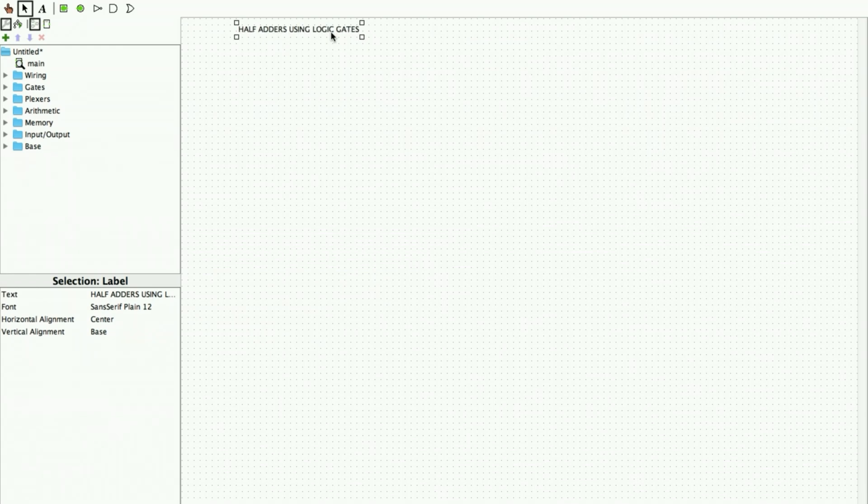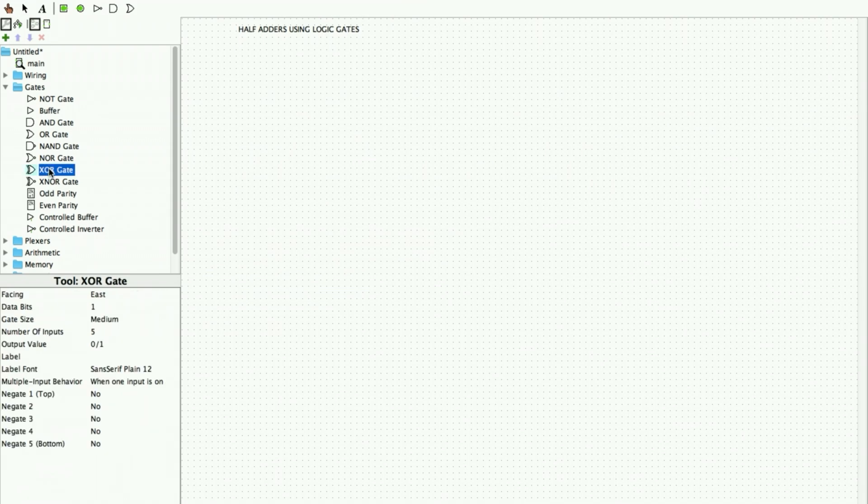So now for my initial half adder circuit I need just two gates. I go to gates here and I need an XOR gate. I click and place it on the screen, and I need an AND gate. I click and place it on the screen.